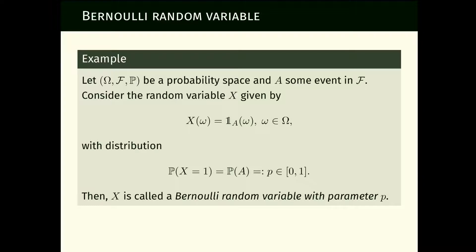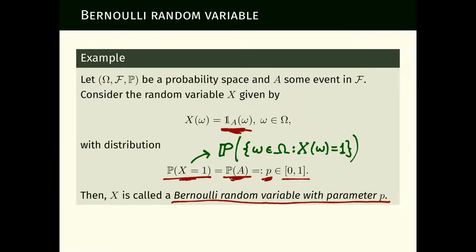Here's the simplest possible random variable, except for the trivial constant case. The indicator of a certain event takes value zero if the event does not occur and value one if it occurs. The probability that it takes value one is exactly the probability that the event A occurs, which is some value p. We call a random variable with this distribution a Bernoulli random variable with parameter p.